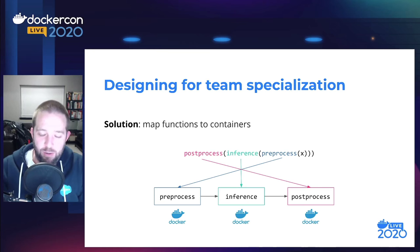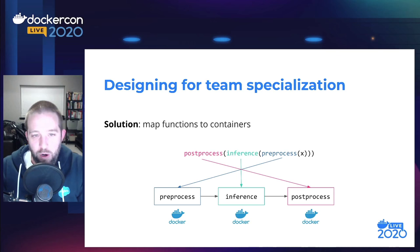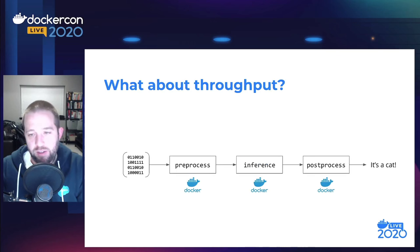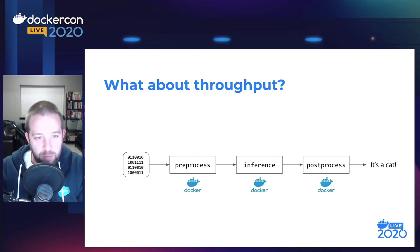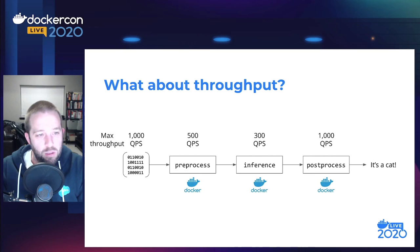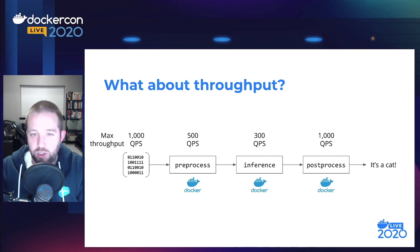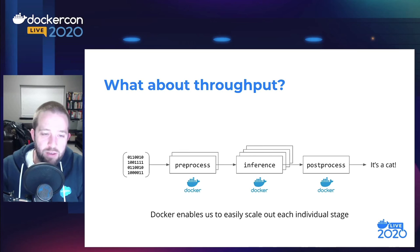Those GPU computers are usually very expensive from a cloud provider — much more expensive than a CPU instance. So we don't want to run everything on the GPU instance because that results in very large bills. We want to minimize usage of those resources. In reality, we don't map every function to a container; you can think of it as mapping resource requirements to the container. Now let's think about throughput — we have a data flow with input being piped through preprocess, then inference, then post-process and out to results.